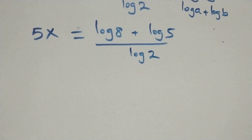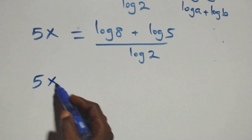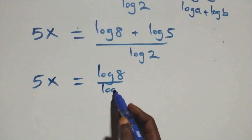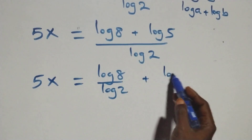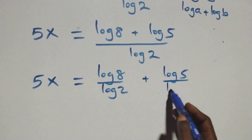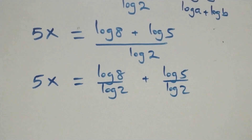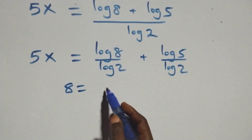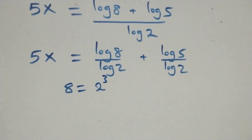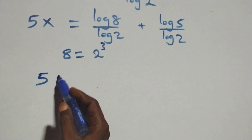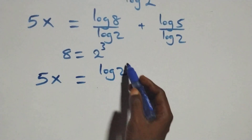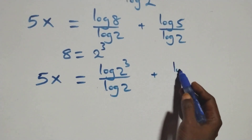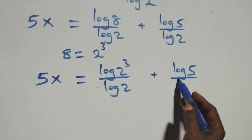So here we have 5x equals log 8 plus log 5, over log 2. We separate this into two fractions: 5x equals log 8 over log 2 plus log 5 over log 2. And 8 can be expressed as 2 times 2 times 2, that's 2 cubed. So this becomes 5x equals log(2 cubed) over log 2, plus log 5 over log 2.